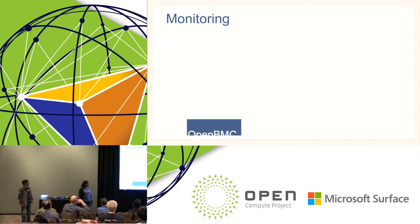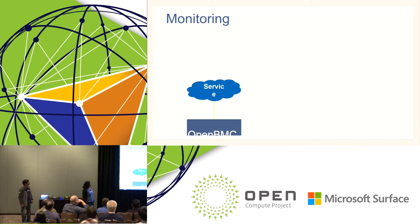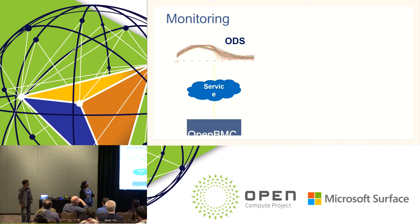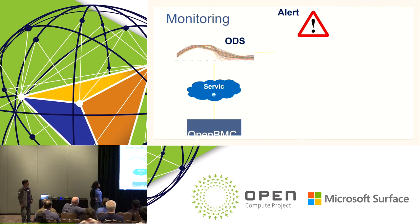For monitoring: OpenBMC lets us monitor many hardware components like fans, power supplies, and everything that comes with the hardware. We run an external service that pushes and pulls data from OpenBMC. This service constantly pulls information and pushes it to our internal monitoring system called ODS — a real-time monitoring system that detects anomalies. For instance, we get fan RPM data from OpenBMC; if a fan dies, the reported RPM would be zero, which is an anomaly that ODS detects and creates an alert for.